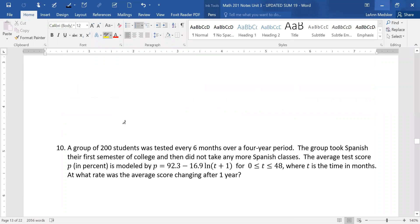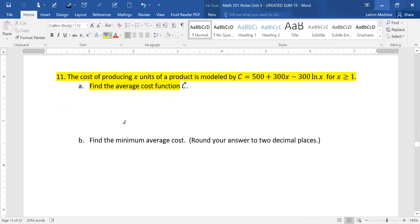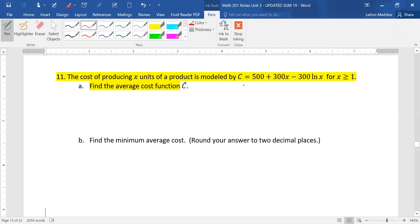Yes, I did not have this one marked that we had completed it, so I'm going to make sure I put it on the video. The cost of producing X units of a product is modeled by C equals 500 plus 300X minus 300 natural log of X for X is greater than or equal to 1, and they want us to find the average cost function.